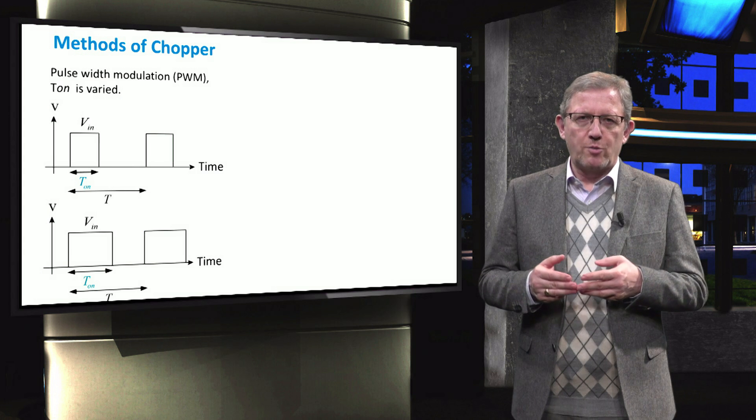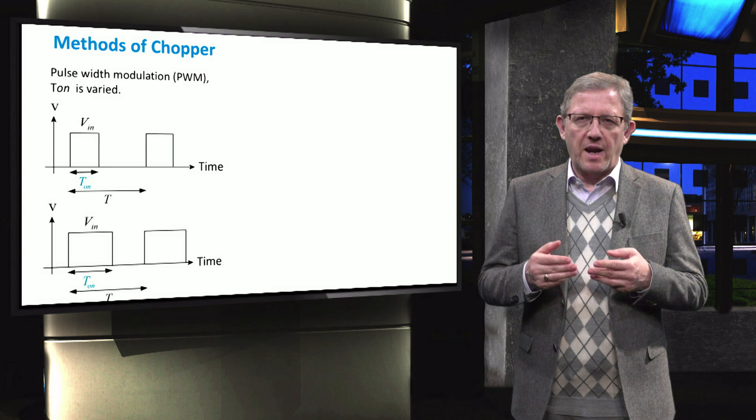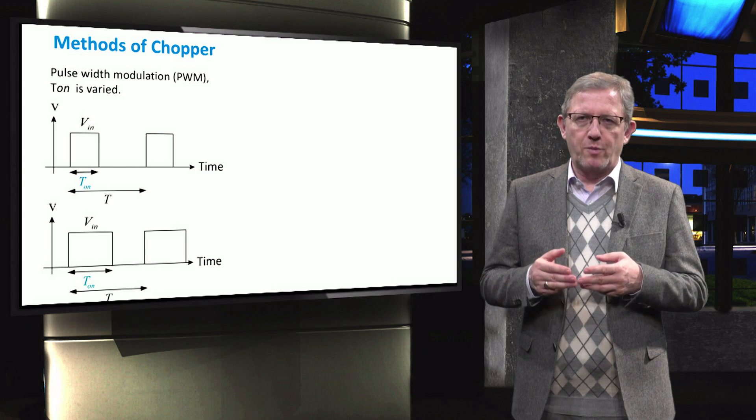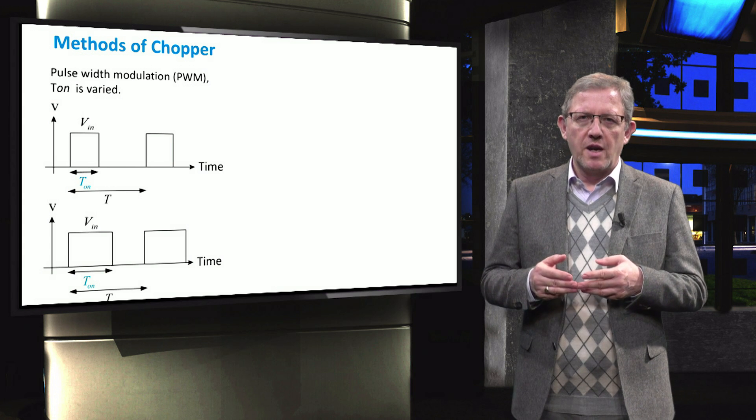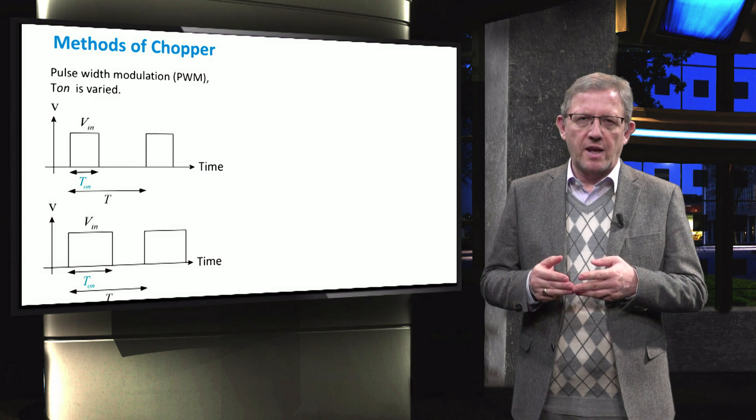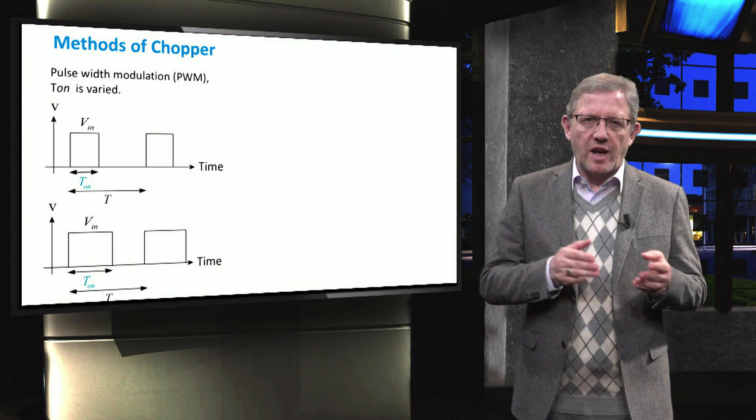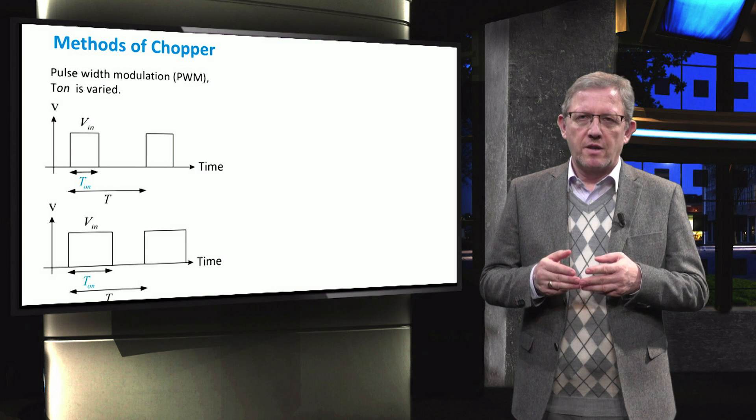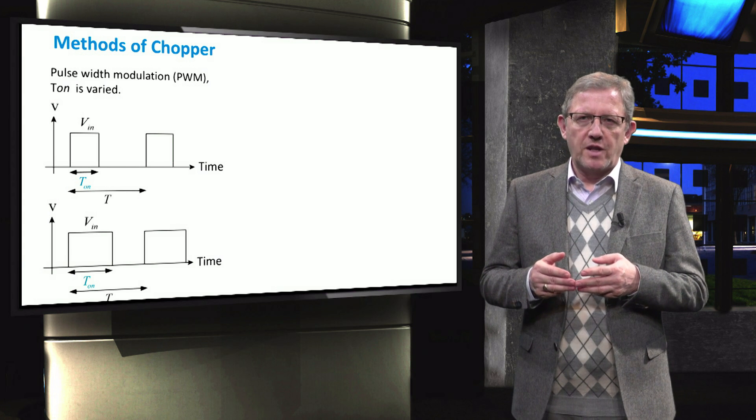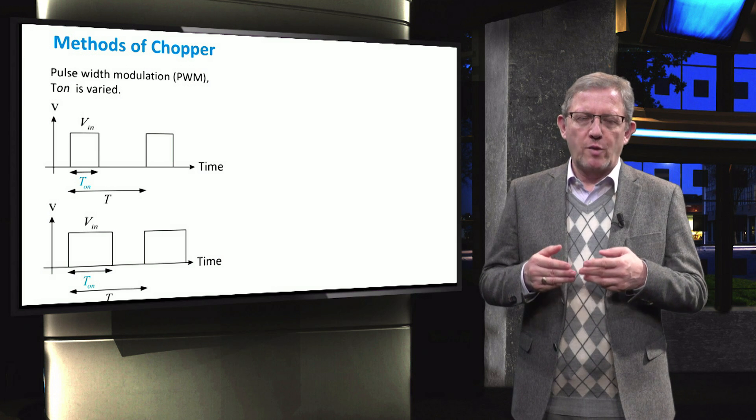There are different ways to chop the DC voltage. In pulse width modulation method or PWM method as we call it, the total time period of the signal is fixed and then the on time of the switch is changed. This method is effective when the fundamental switching frequency has to be constant.